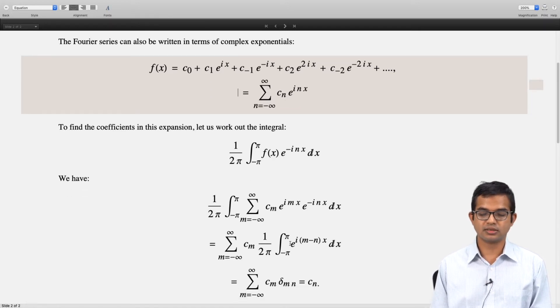This integral is just going to give you 2π times delta(m,n). If m equals n, then you get 2π. If m is not equal to n, this integral is going to be zero.